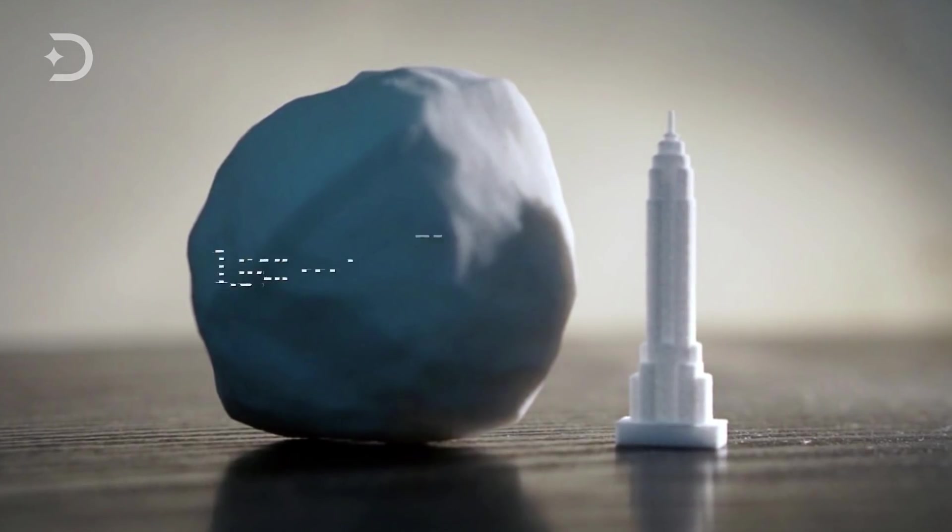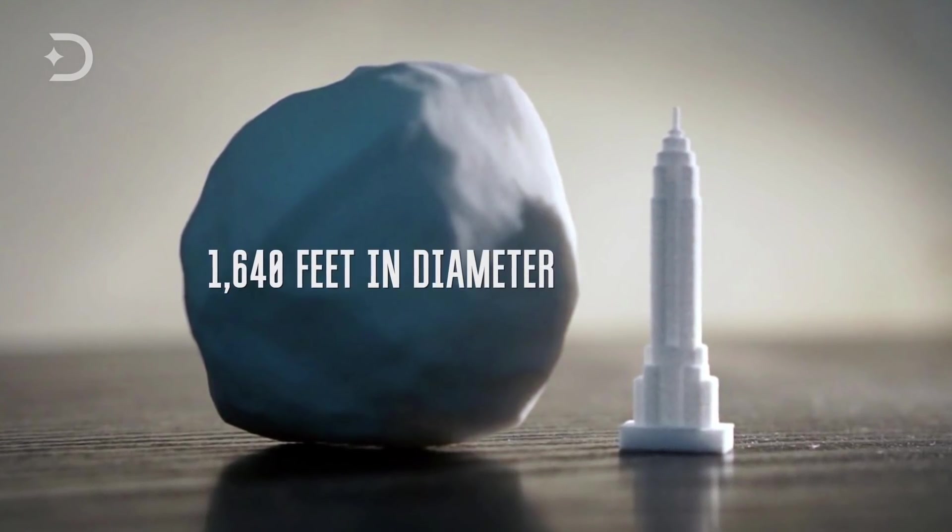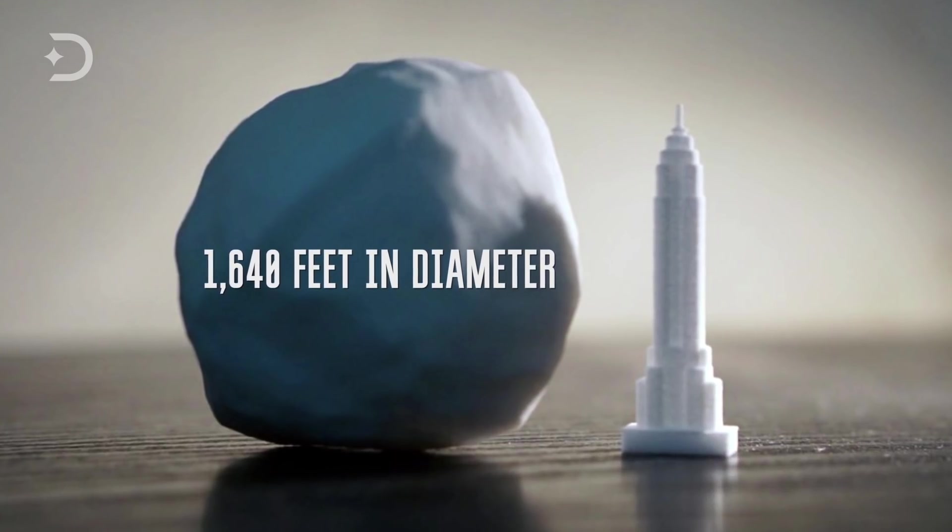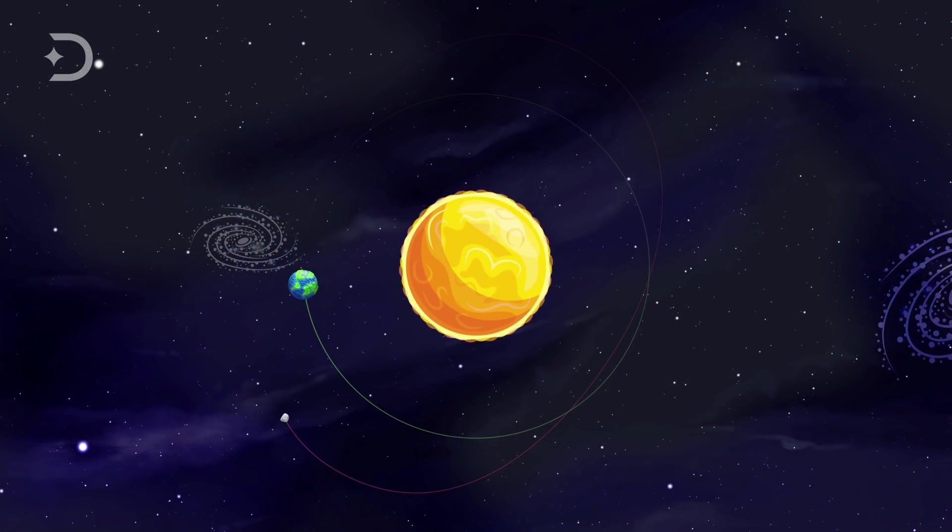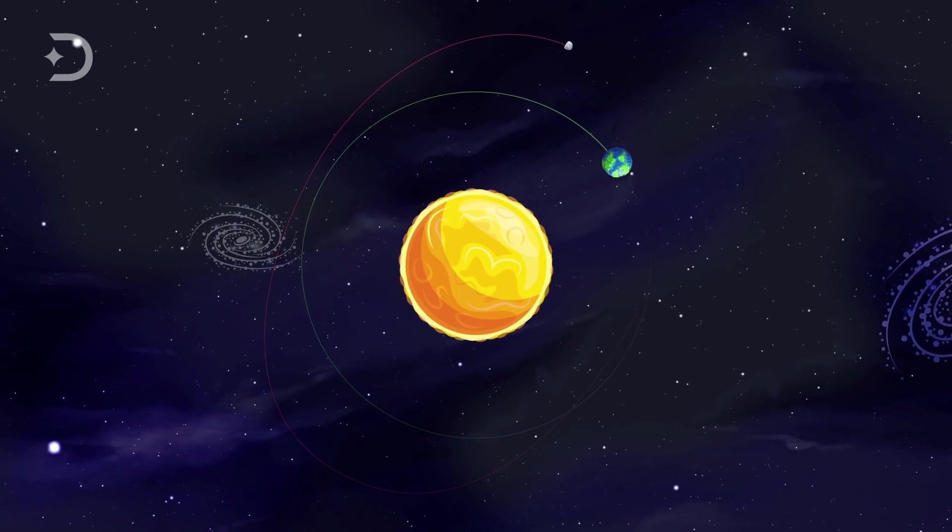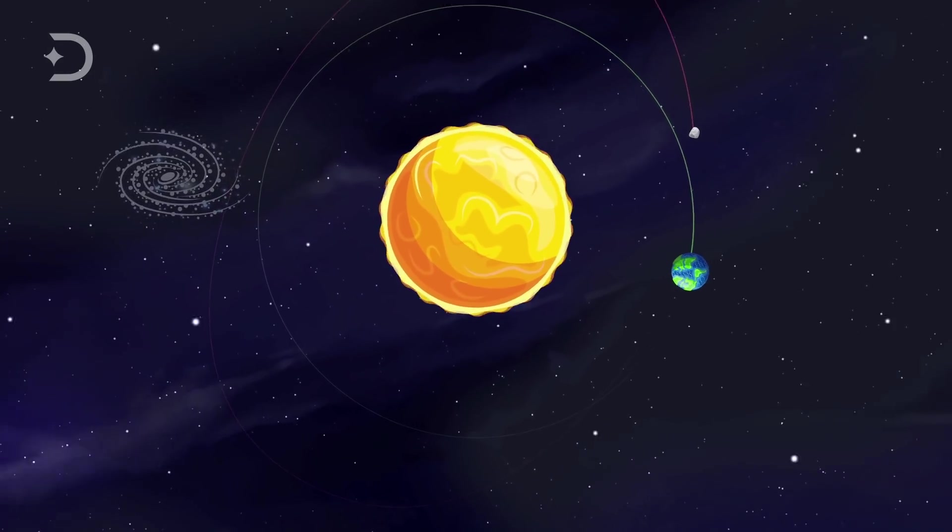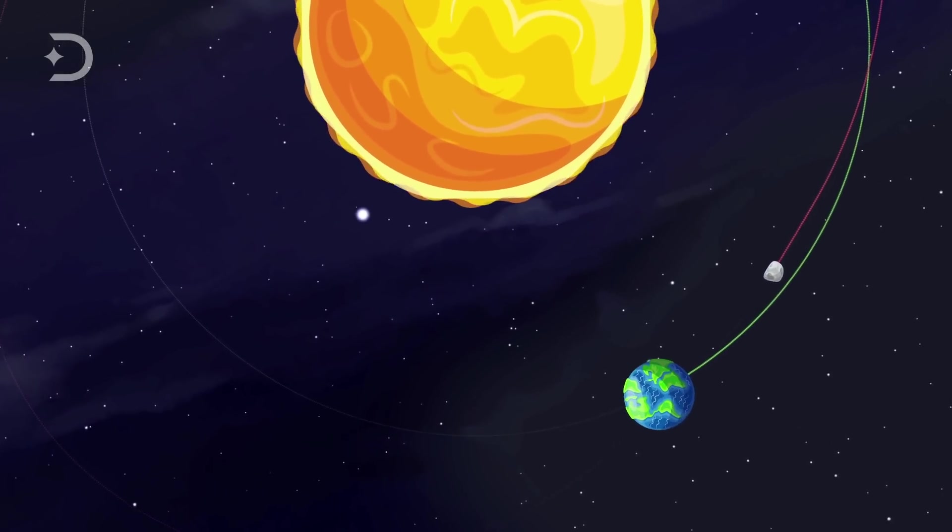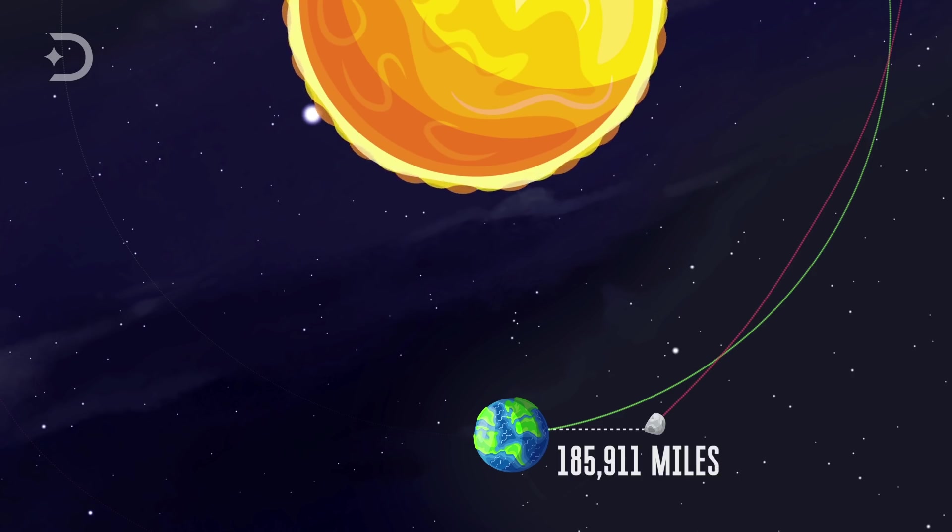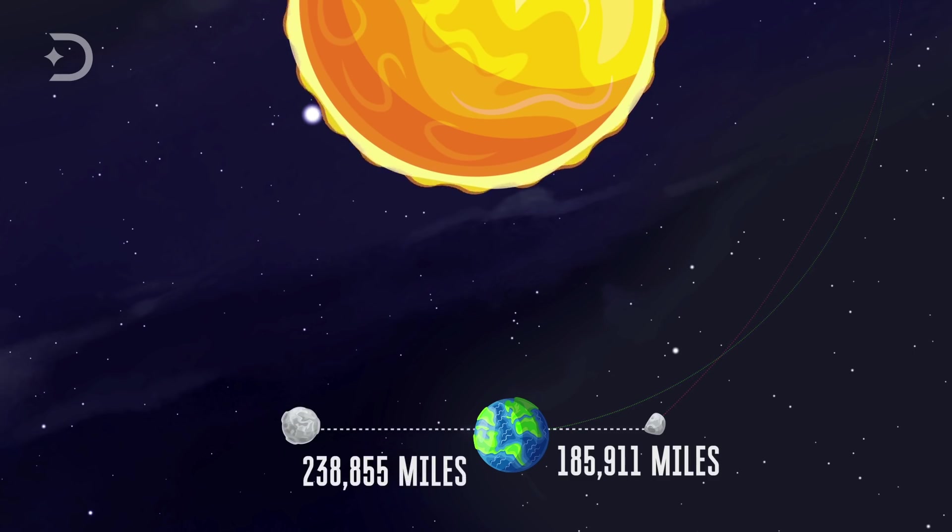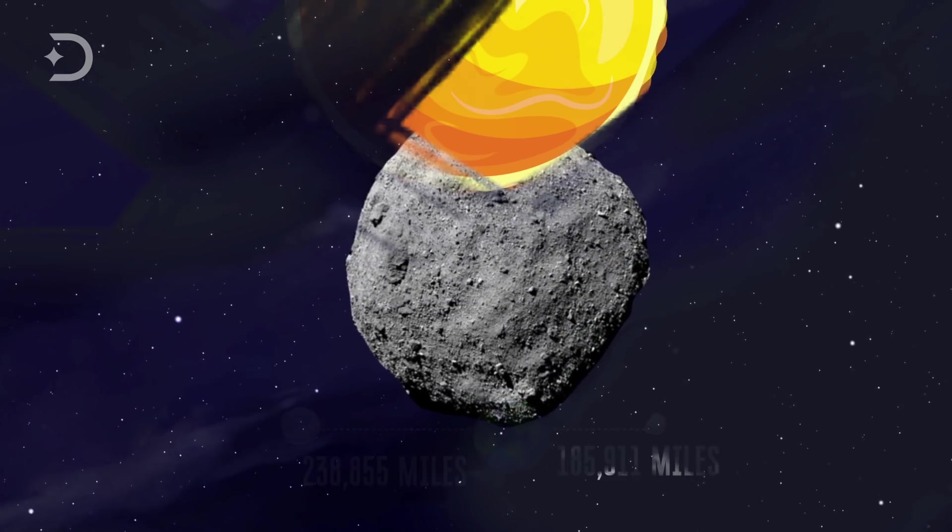Bennu is roughly 1,640 feet in diameter, about the same height as the Empire State Building in New York. It orbits our Sun every 1.2 years and every 6 years it comes very close to Earth, within .002 astronomical units or AU, which is about 185,911 miles away. That's very close considering it's within the orbit of the Moon, which is on average 238,855 miles away from us.